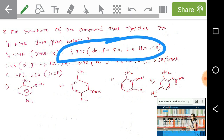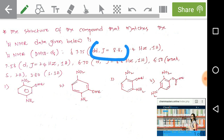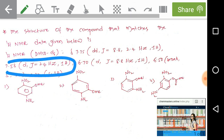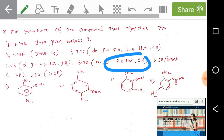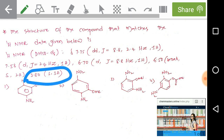Now we need to check the given spectral data. The chemical shift value is given as 7.75 delta, double doublet, J = 8.8, 2.4 Hz, 1 hydrogen. Next, 7.50 doublet, J = 2.4 Hz, 1 hydrogen. Next, 6.70 doublet, J = 8.8 Hz, 1 hydrogen. 6.50 broad singlet, 2 hydrogens. 3.80 singlet, 3 hydrogens. This is the given spectral data of HNMR.